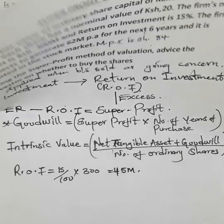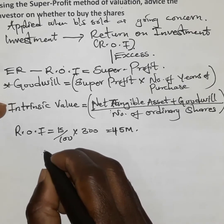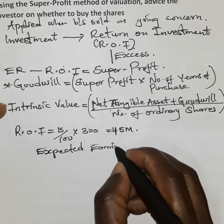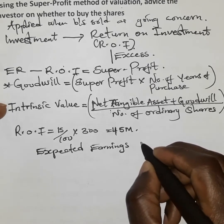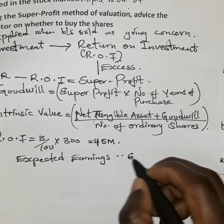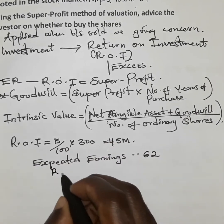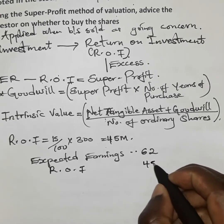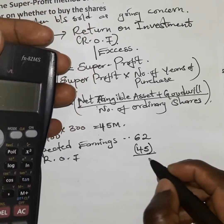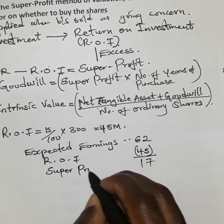We already have the expected return, so the super profit is expected earnings of 62 million minus return on investment of 45 million, giving us 17 million. So 17 million is the super profit.